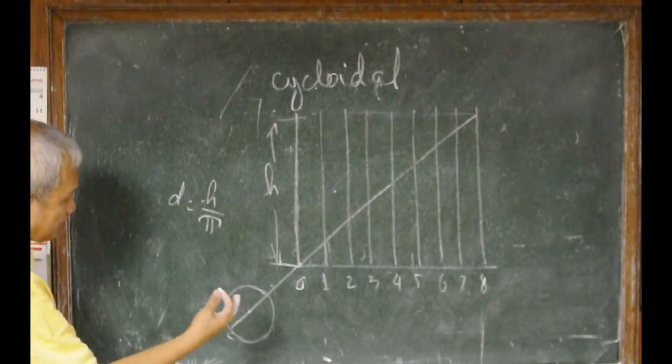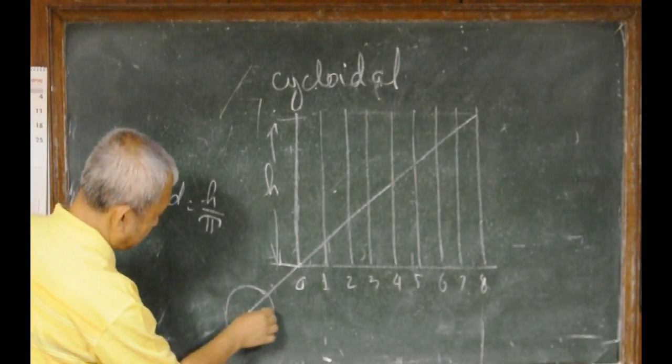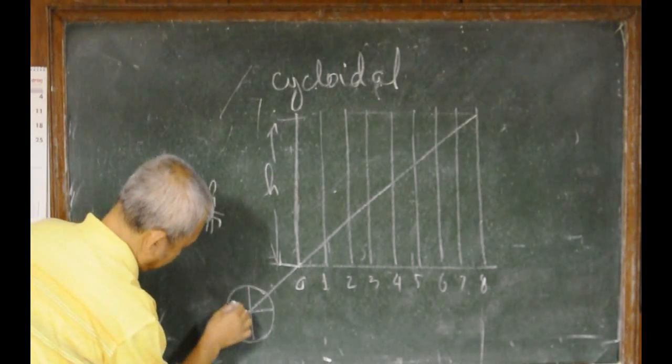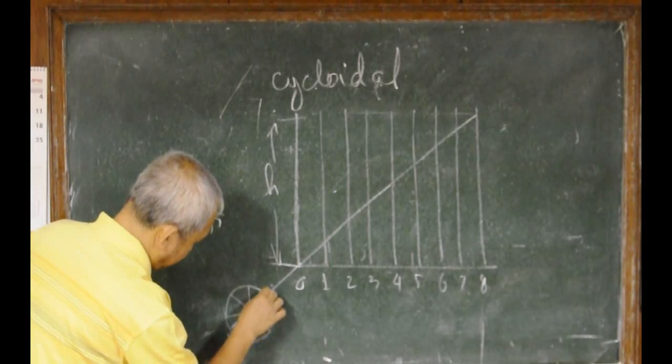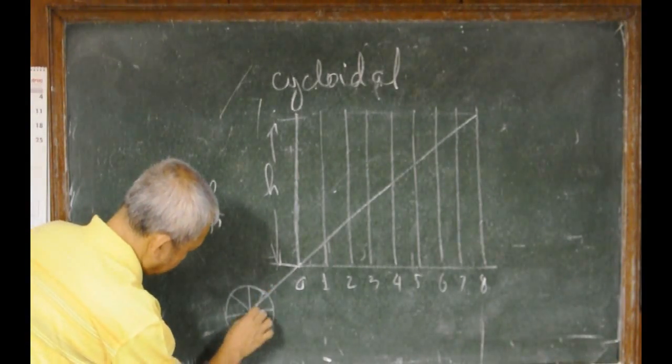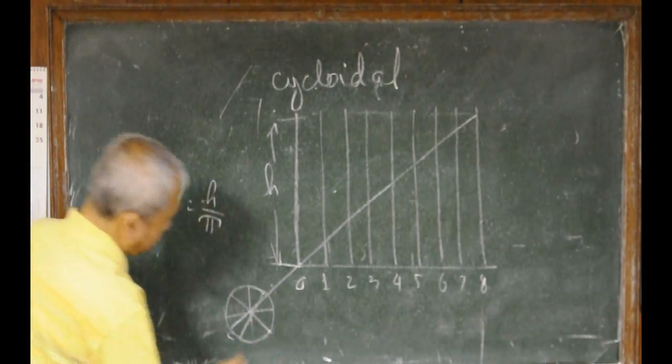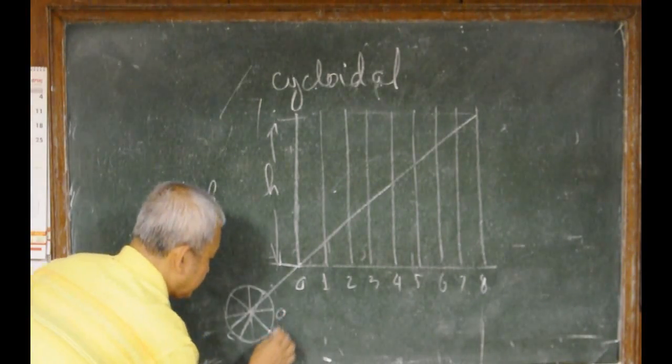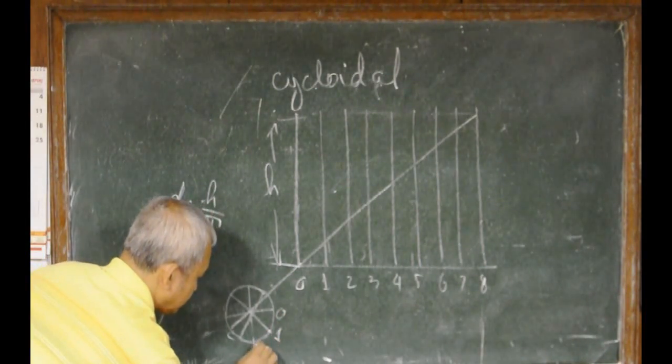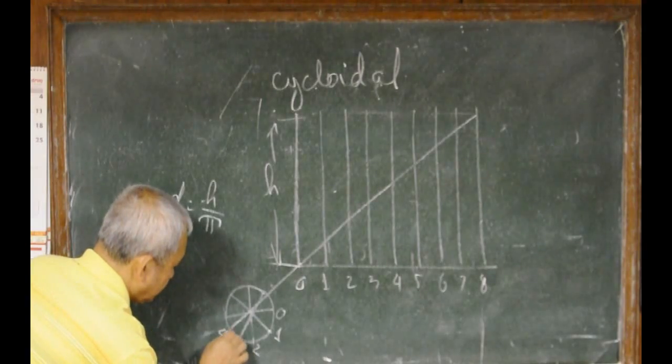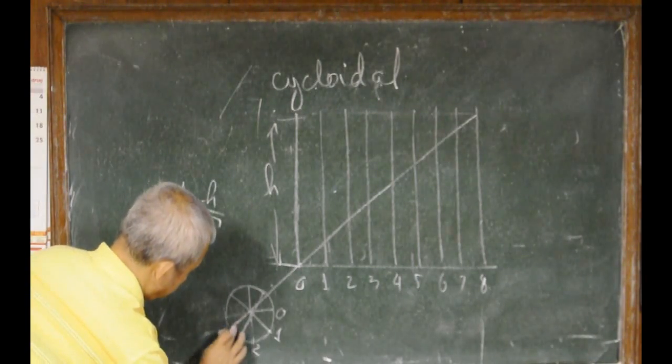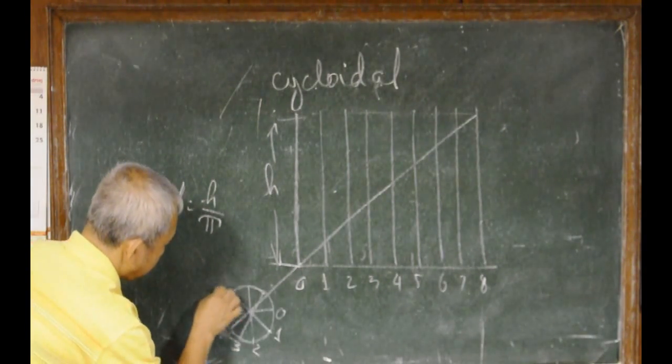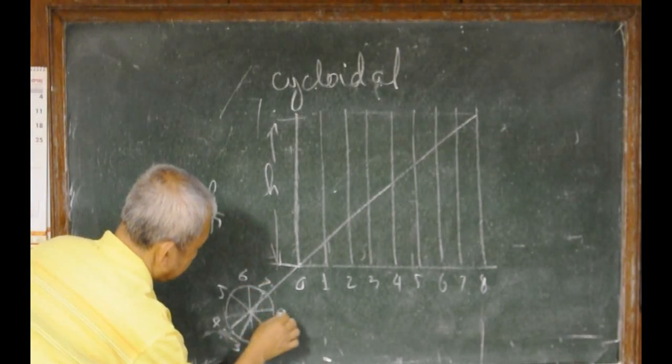And now, we will divide the circle into 8. That will be 8 divisions. And with here as the starting point, this will be 1, 2, 3, 4, 5, 6, 7, and 8.